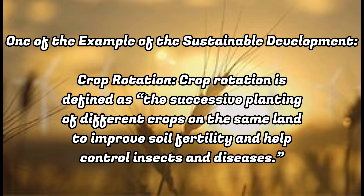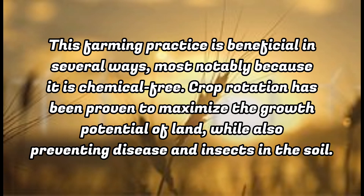One example of Sustainable Development is crop rotation. Crop rotation is defined as the successive planting of different crops on the same land to improve soil fertility and help control insects and diseases. This farming practice is beneficial in several ways, most notably because it is chemical-free.